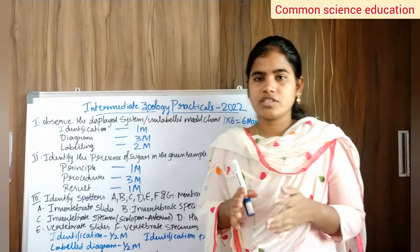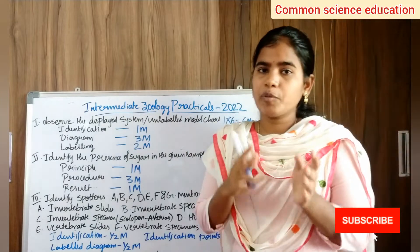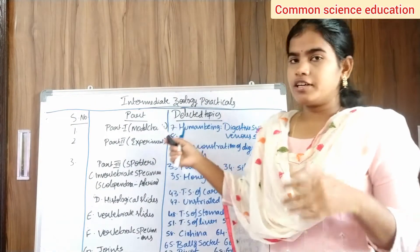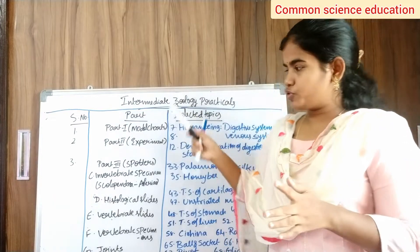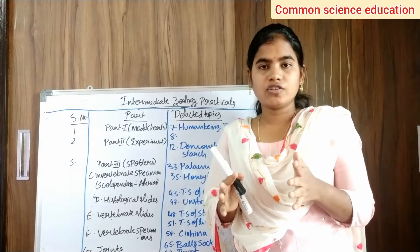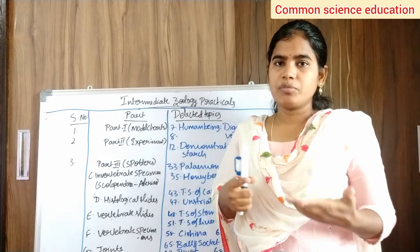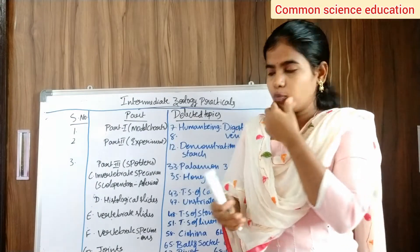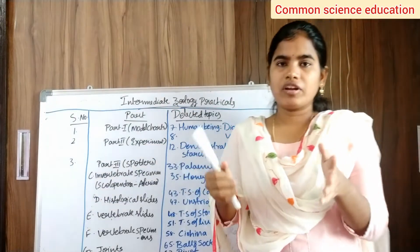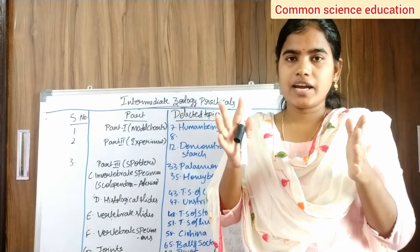Roman number 4 is the practical record, carrying 5 marks. For the practical record, we have to draw diagrams. The record covers Part 1 — unlabeled charts, Part 2 — experiment, and Part 3 — slides and spotters.